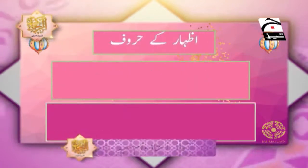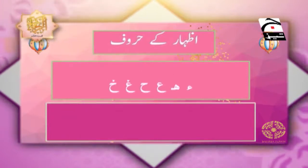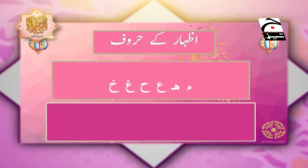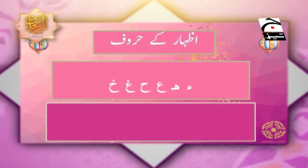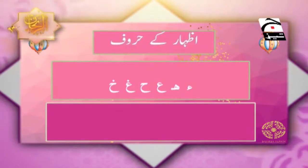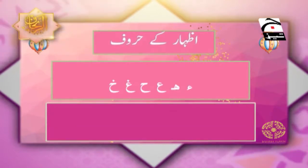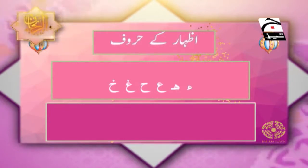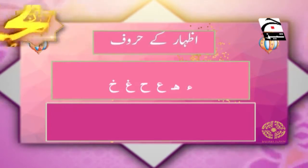اظہار کے حروف کتنے ہیں اور کون کون سے ہیں؟ حمزہ، عائن، حا، غائن، خا — آپ کو کچھ یاد آیا؟ ہم نے یہ حروف کہاں پڑھے تھے؟ کون سے مخرج سے؟ جی، جب ہم نے حلق پڑھا تھا۔ حلق میں چھے حروف تھے، اسی لیے یہ چھے حروف حلقی ہیں۔